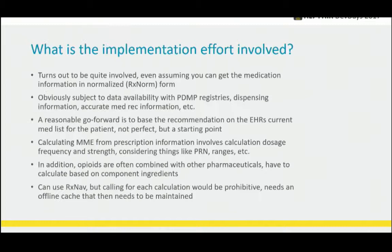What's the implementation effort involved in just this one recommendation? It's quite difficult. Even if you can get the medication information in normalized form, you've got to break down the ingredients for combination drugs. The tables to get the strengths can be pulled from RxNorm, but it's quite an involved calculation. It's also a constantly maintained table, subject to data availability, dispensing information, and PDMP registry. A reasonable go-forward was to base the recommendation on the EHR's current med list — not perfect, but a starting point.